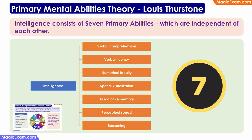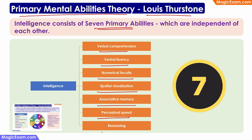Next, we will look at Louis Thurston's primary mental abilities theory of intelligence. As per Thurston, intelligence consists of seven primary abilities, which are verbal comprehension ability, verbal fluency, numerical faculty, spatial visualization, associative memory, perceptual speed, and reasoning ability.